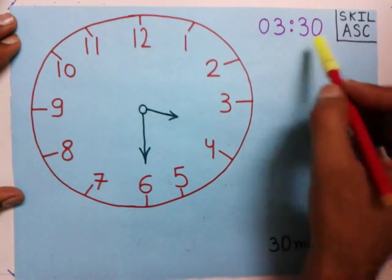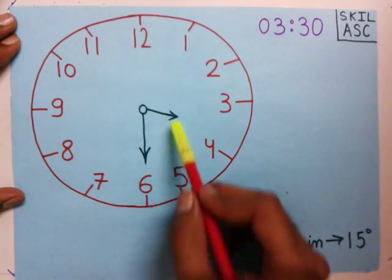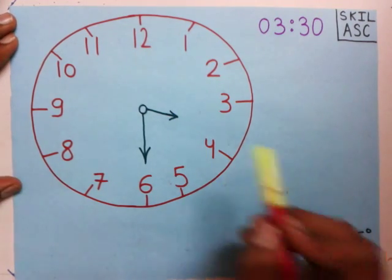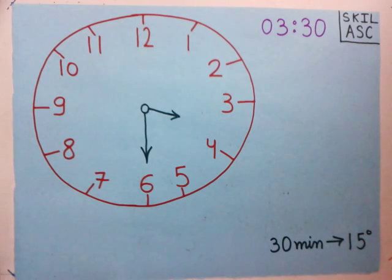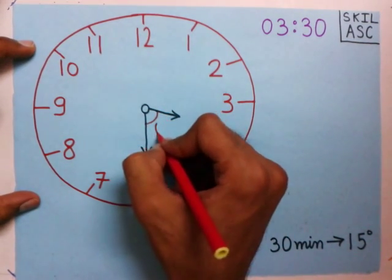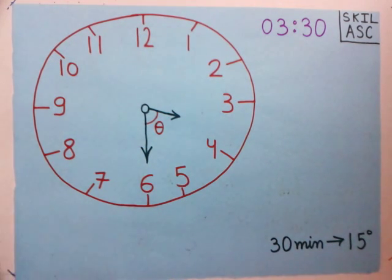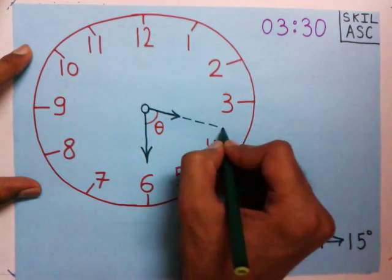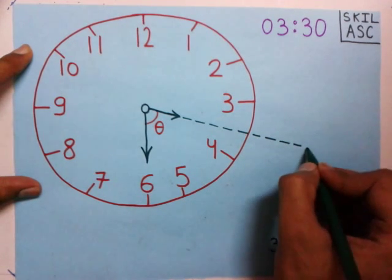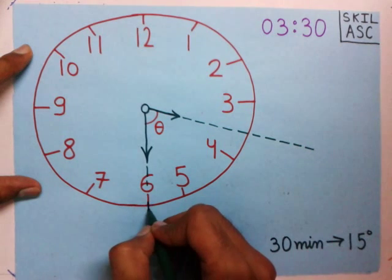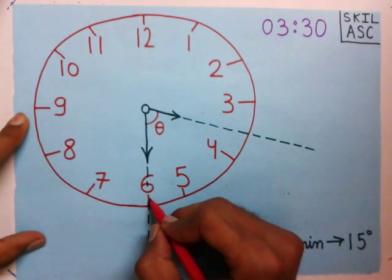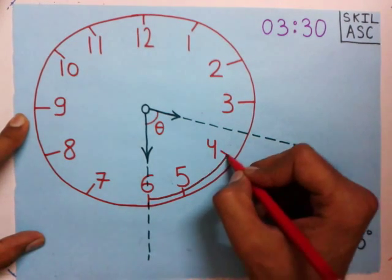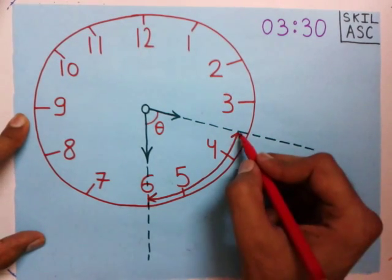At the time 3:30, the position of the hands will be at this position. Now we have to find the angle between the hour hand and minute hand at time 3:30. We have to find this angle theta. We extend these hands so that it becomes easier to understand. We need to find the angle from this position to this position.